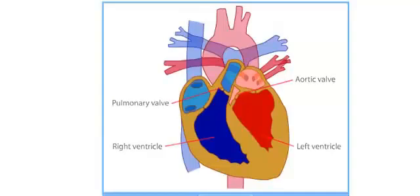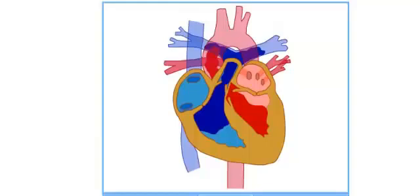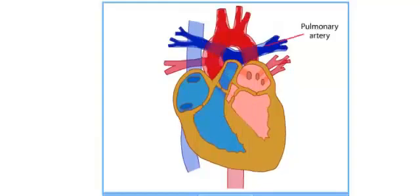And then as these ventricles contract, they send the blood through the valves, going into two different areas. The blood that's leaving through the pulmonary artery is going to the lungs to pick up oxygen. And the blood that's leaving through the aorta already has oxygen, so it's now going out to the rest of the body to deliver to the cells. So that's the pathway of the blood through the heart as the heart contracts with each beat.